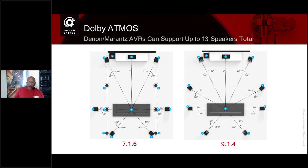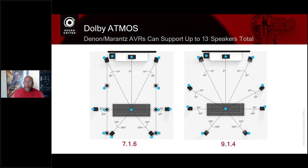Our flagship Denon and Marantz AVRs support up to 13 channels, and those speakers can be configured as a 7.1.6 or a 9.1.4 — it's up to your preference. Do you want more height or more horizontal width? I tend to favor 7.1.6 because it seems to fit rooms better. Jim adds that it also depends on the room: if it's a very wide room that's not very deep, with seating spread rather than row upon row, front wides might give a better response.